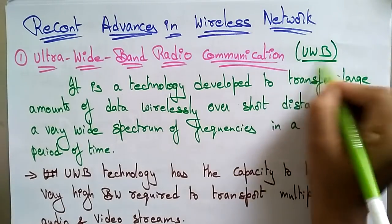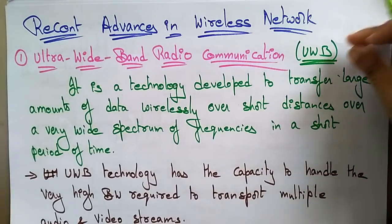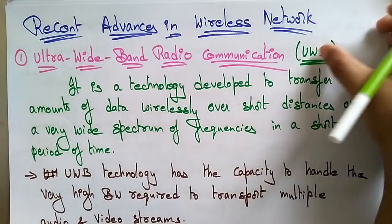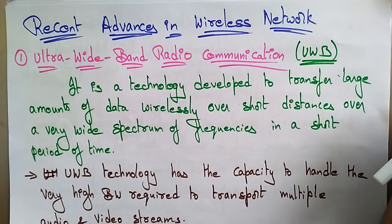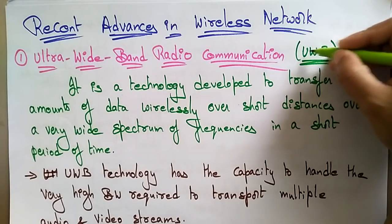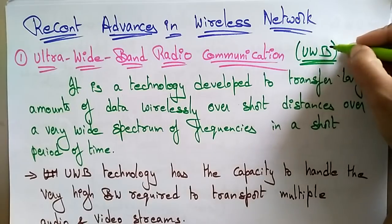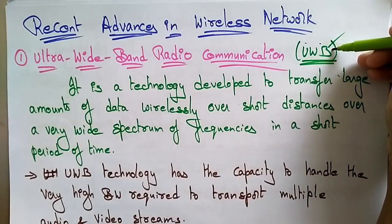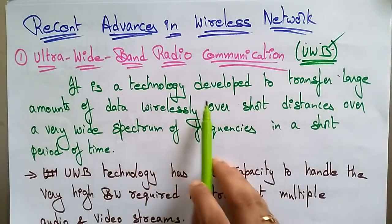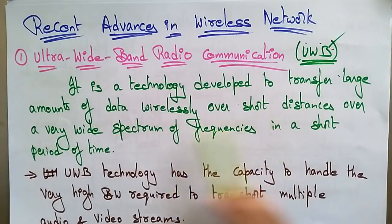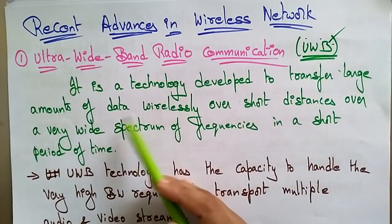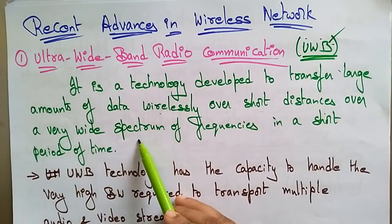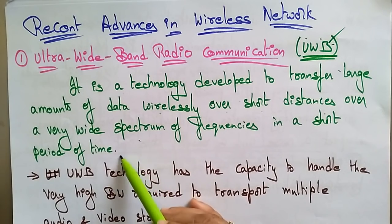UWB — Ultra Wide Band radio communication — is a technology developed to transfer large amounts of data wirelessly over short distances, over a very wide spectrum of frequencies, in a short period of time. That's why we call it an advanced technology.